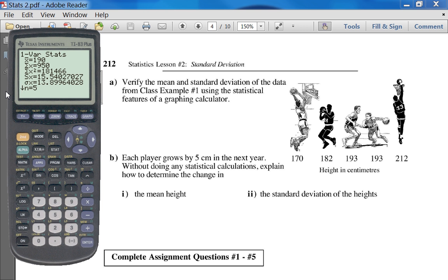And the N value, N equals 5, just tells you that there's 1, 2, 3, 4, 5 data values. All right, now we can actually do some thinking. I want you to think, the very next year, all these basketball players, they grew by 5 centimeters each. Interesting. So, this guy becomes 175, 187, 198, 198, and 217. So, what would happen to the average height?